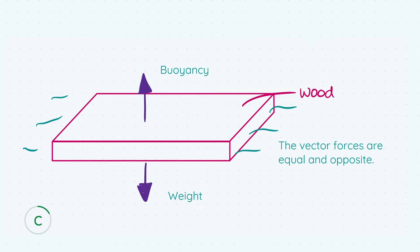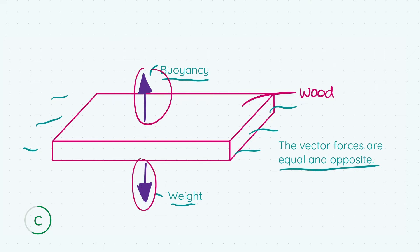There are two forces working in opposite directions. Buoyancy acts upwards — it's the reason the piece of wood floats. Weight acts downwards — that's the weight of the wood itself. Since the wood is floating at rest, the buoyancy force and the weight force are equal and opposite vectors; it's completely stationary, floating in one place. I've represented this by drawing both arrows the same size in completely opposite directions — the same size indicates they're equal in magnitude.